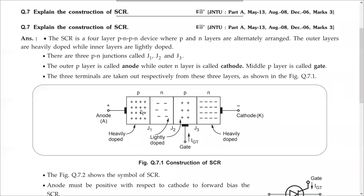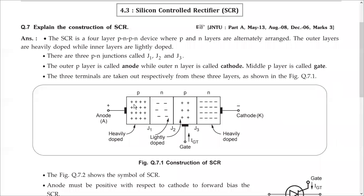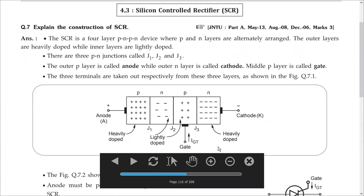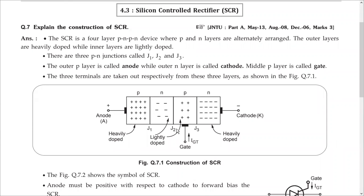What about the regions? The first and last regions are heavily doped. The plus signs represent holes — they are placed close to each other, more number of holes — heavily doped. Minus signs represent free electrons — they are more, closely packed — heavily doped. The middle two regions are lightly doped. In a real device there are large numbers of charge carriers, but for representation only 6 are shown. You can observe: more plus in the first region, more minus in the last region, fewer in the middle two regions — indicating the first and last are heavily doped, and the middle two are lightly doped.